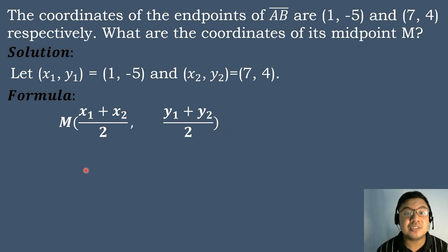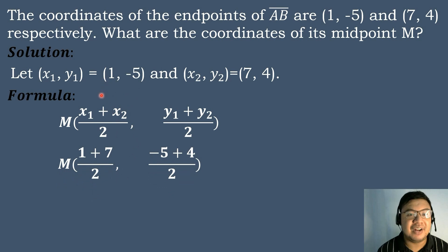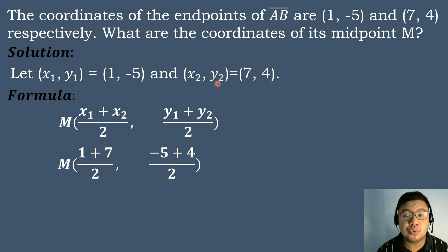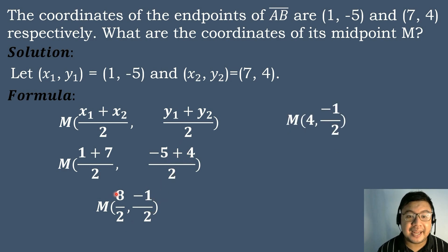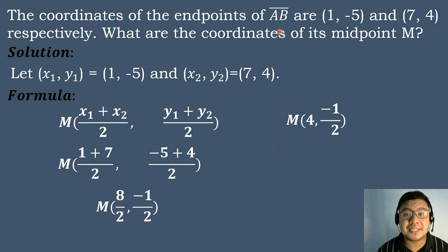All we need to do is to substitute the corresponding values. The value of x sub 1 is equal to 1, plus the value of x sub 2 is equal to 7, then divided by 2. Then the value of y sub 1 is equal to negative 5, plus the value of y sub 2 is equal to positive 4, divided by 2. And then we will simplify. 1 plus 7 is equal to 8 over 2. And then negative 5 plus 4 is equal to negative 1 over 2. 8 divided by 2 is equal to 4; bring down negative 1 half. Therefore, the midpoint of segment AB is the ordered pair (4, negative 1/2).